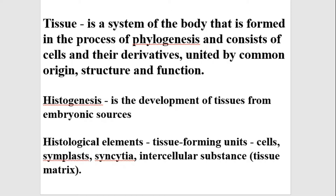The next tissue-forming unit is the symplast. Symplasts are structures which are not cells because they do not contain a sufficient amount of cell membrane. They can contain a large amount of organelles and cytoplasm, but less cytolemma than is necessary for a cell. Examples of symplasts include cytotrophoblast and muscle fibers, which are tissue-forming units of skeletal muscle.